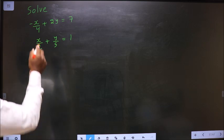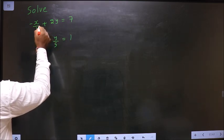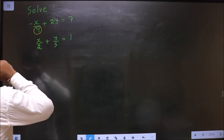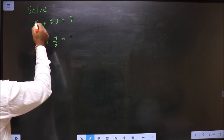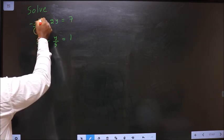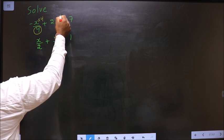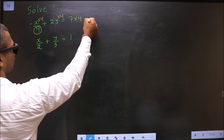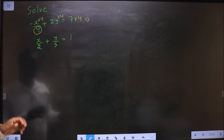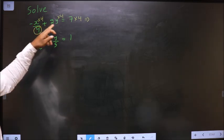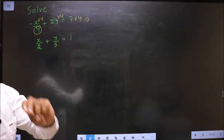See, in this equation there is only one denominator, that is 4. So to remove 4, what you should do is multiply with 4 to each term. Am I clear with my point? To remove 4, multiply with 4 to each term.